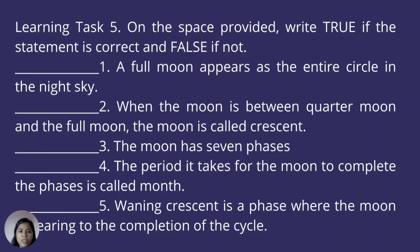For Learning Task Number 5, the last learning task, write true if the statement is correct and false if not. Number 1 — A full moon appears as the entire circle in the night sky. Number 2 — When the moon is between quarter moon and the full moon, the moon is called crescent. Number 3 — The moon has 7 phases. Number 4 — The period it takes for the moon to complete the phases is called month. Number 5 — Waning Crescent is a phase where the moon is nearing the completion of the cycle.